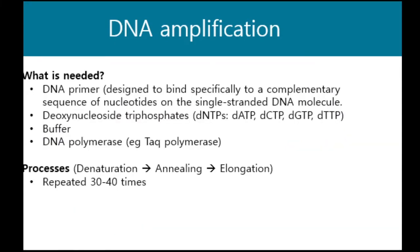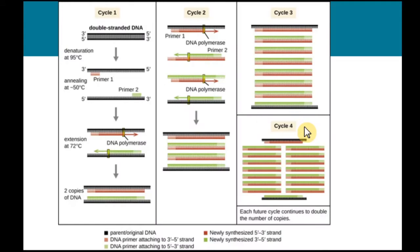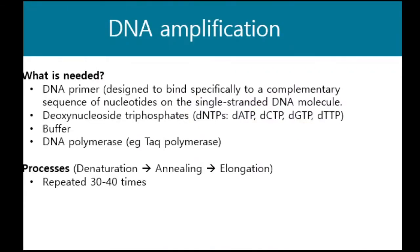What we need for PCR are: a DNA primer, designed to bind specifically to a complementary sequence of nucleotides on the single-stranded DNA molecule and specific to the region we want to amplify; deoxyribonucleoside triphosphates (dNTPs), which are the pool of nucleotide bases generated during amplification; a buffer; and DNA polymerase, such as Taq polymerase, which is the enzyme that catalyzes the replication of DNA.